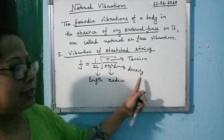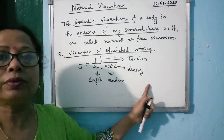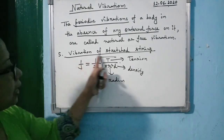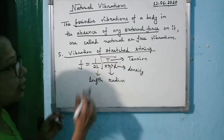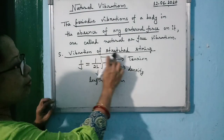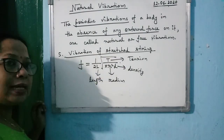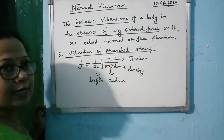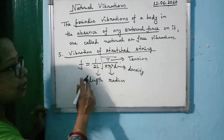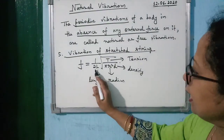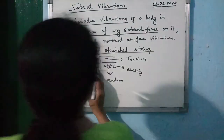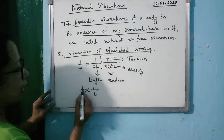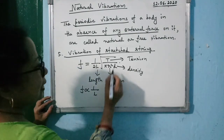From this formula you can derive all the relationships. Since L is in the denominator, frequency F is inversely proportional to L. Frequency is directly proportional to the square root of tension T. Since R² appears under the root, F is inversely proportional to R. And F is inversely proportional to the square root of density D.